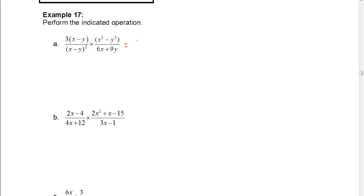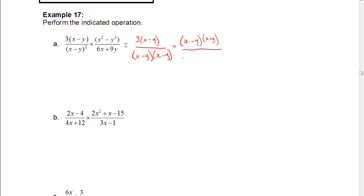We're going to start this one by factoring, so we get 3 times (x minus y) over — now this is (x minus y) all squared — we're not going to expand that, we're just going to write it as (x minus y) times (x minus y) to show what that squared means. Then that's multiplied by x squared minus y squared, which factors as (x minus y) times (x plus y).